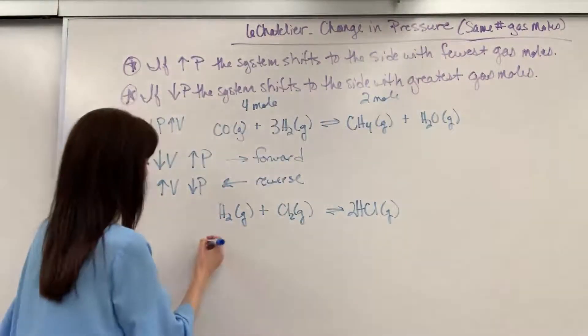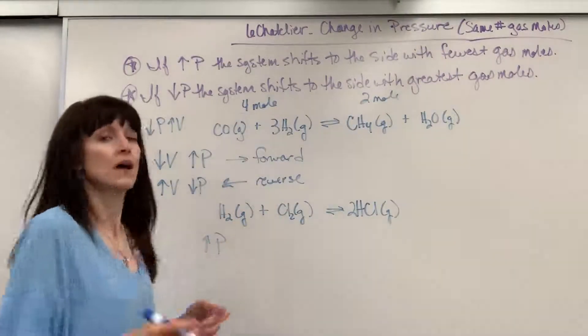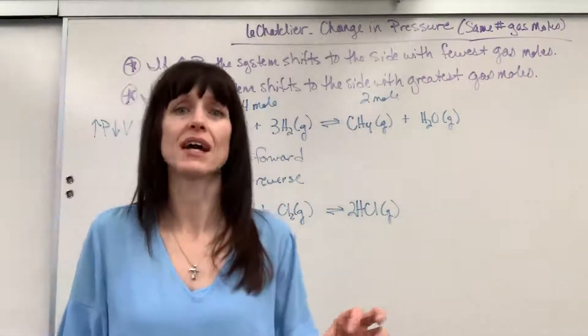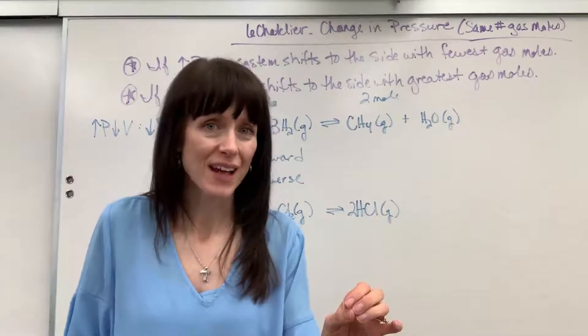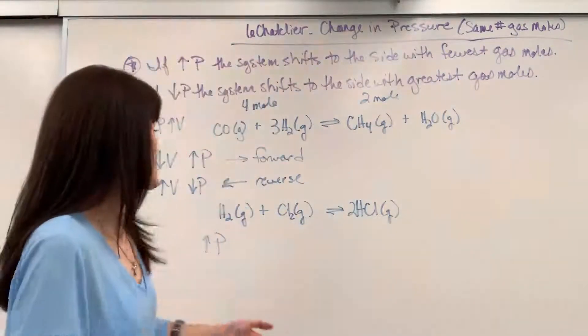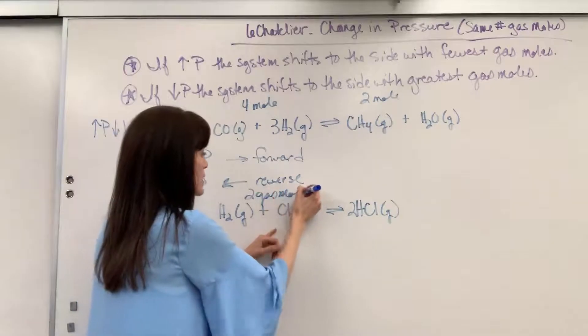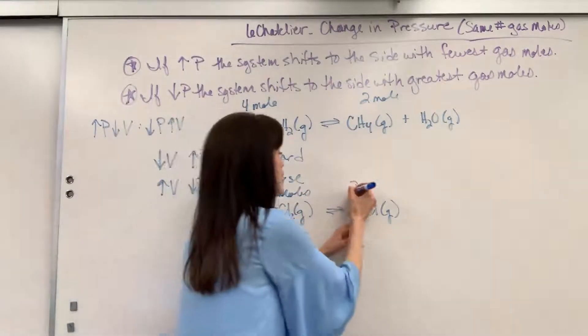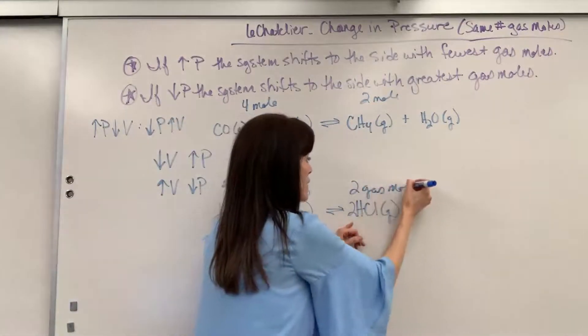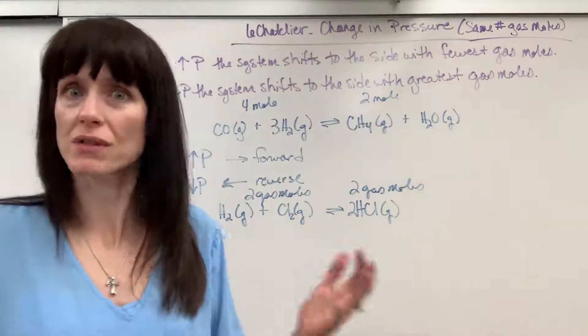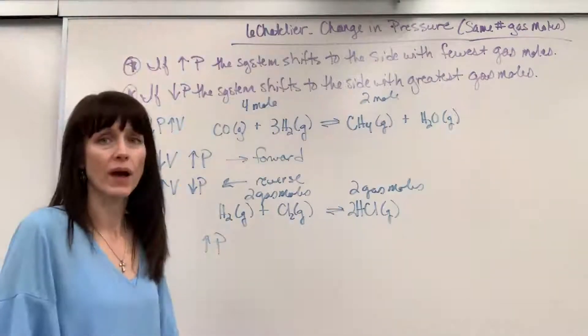Let's say that we're going to increase the pressure. Okay, so you and I have memorized, when you increase pressure, this is going to shift to the side with the fewest gas moles. So we have to count gas moles. So I've got one, two gas moles on the reactant side and two gas moles on the product side. They're the same. I don't have a fewest or greatest number of gas moles. So here's the big takeaway.